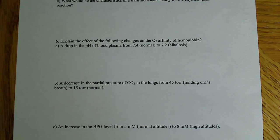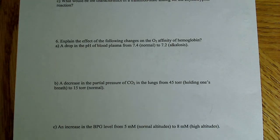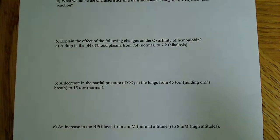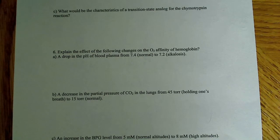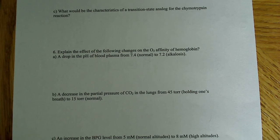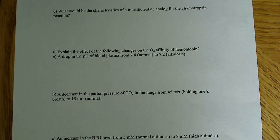In this video I want to solve a series of about four problems involving hemoglobin and the various effects of different allosteric molecules on it. Number six says: explain the effect of the following changes on the O2 affinity of hemoglobin. The first one says a drop in the pH of blood plasma.